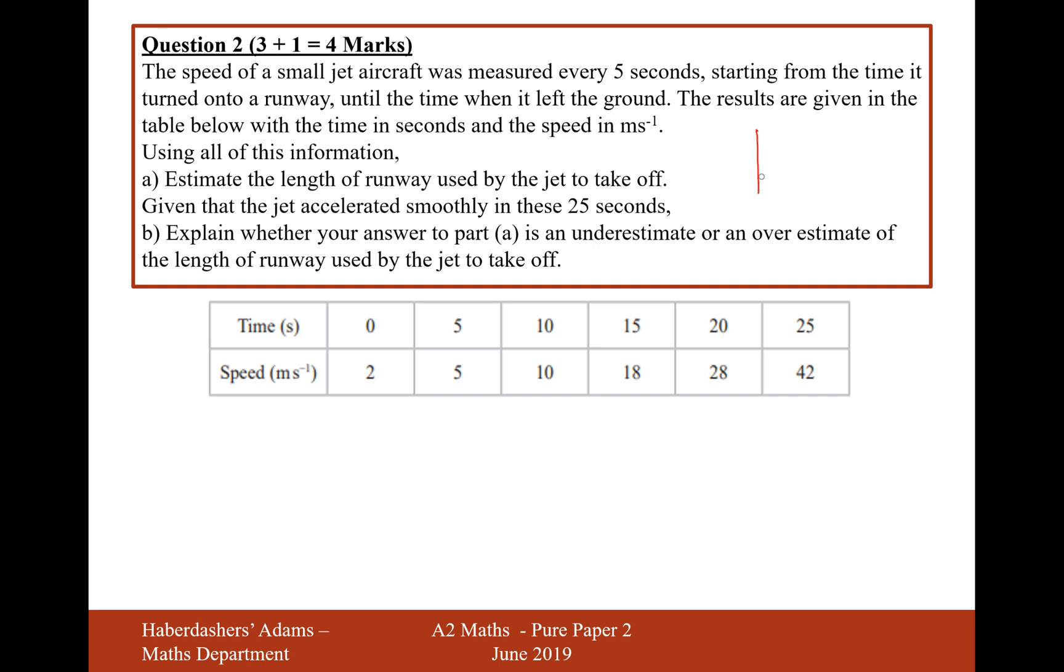If I've got a graph, and this is obviously a graph that's been measuring speed against time, and it seems like it's increasing: at 0 it's 2, at 5 it's 5, at 10 it's 10, at 15 it's 18, so it looks like the speed is increasing.